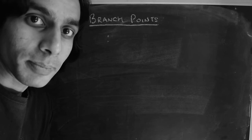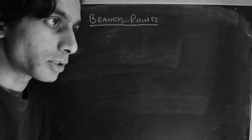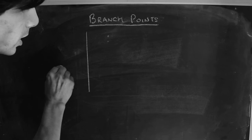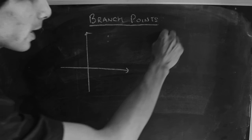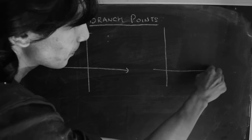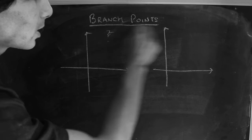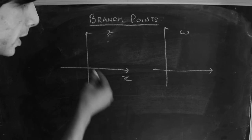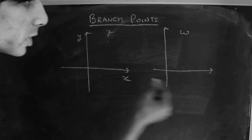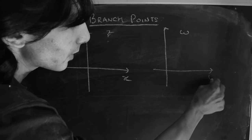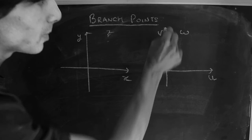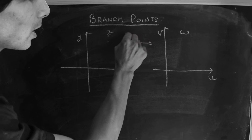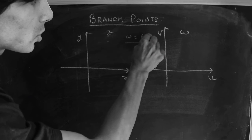So what exactly is a branch point of a mapping? Let's look at that in this particular video. Let's say you have the z-plane and the w-plane. The real axis in the z-plane is labeled x and the imaginary axis y, while in the w-plane we have u for the real axis and v for the imaginary axis, and we're considering the mapping w which is some function of z.